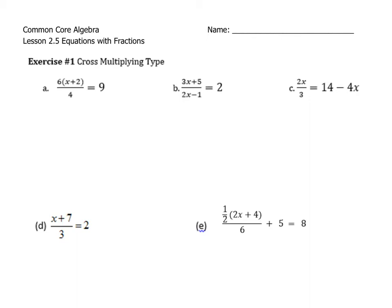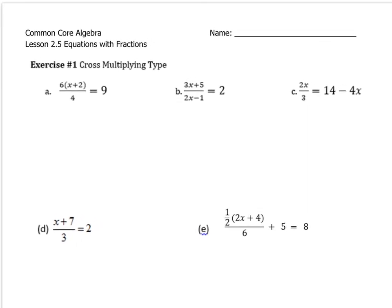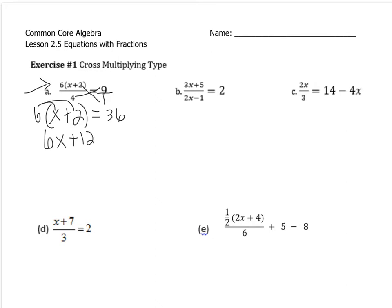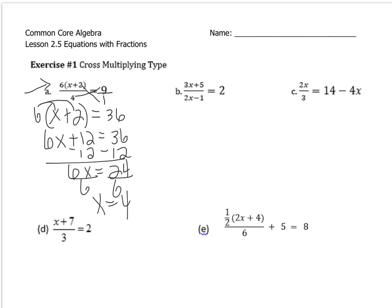First we're going to tackle some of the cross-multiplying type. Here you have something that almost looks like a proportion, but to make it a proportion we'd have to turn this 9 into a fraction by placing it over 1. Now we have a proportion. We're going to cross multiply: 1 times 6(X + 2) is 6(X + 2), equals in the middle, and 4 times 9 is 36. We must distribute to get rid of those parentheses — you end up with 6X + 12 = 36. Subtracting 12 from both sides gives 6X = 24, and dividing by 6 on both sides gives X = 4.